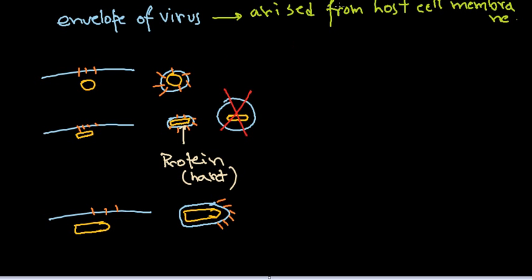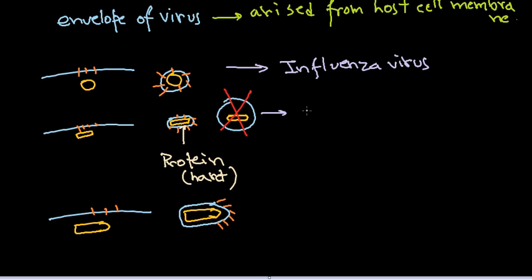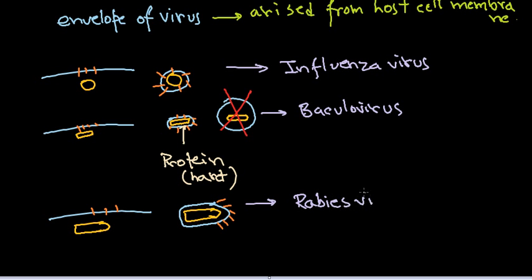Now, examples for all these structures: the spherical structure example is the influenza virus. The rod-shaped structure example is the baculovirus, which mostly infects insects or birds. The bullet-shaped structure is common for rabies virus. The thread-like structure is seen in Ebola virus, which is a very dangerous virus. All of these are enveloped viruses.